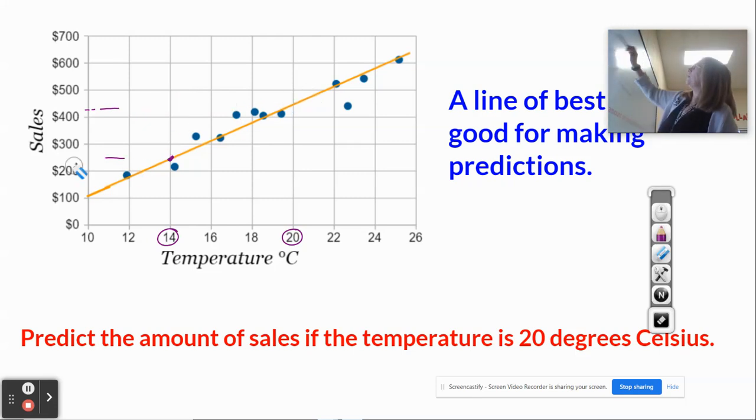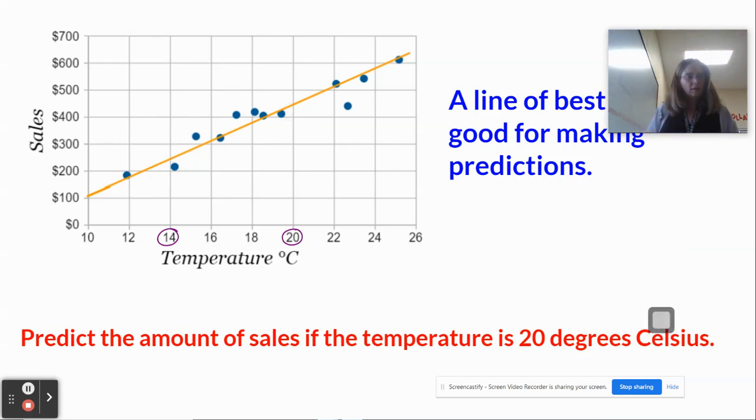And you can work backwards as well. For example, if I'm predicting that I am going to make, let's see, let's do, I'm trying to think of a good amount, $300. So I go to $300 on my graph right here. I follow it over.